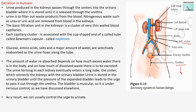Now let us understand the detail. The urine produced in the kidneys passes through the ureters into the urinary bladder, where it is stored until it is released through the urethra. Urine functions to filter out waste products from the blood. Nitrogenous wastes such as urea and uric acid are removed from the blood in the kidneys.